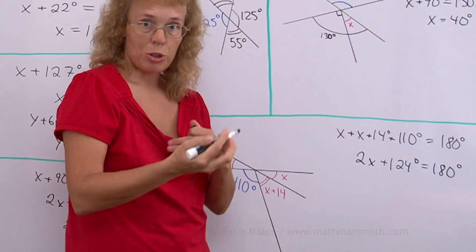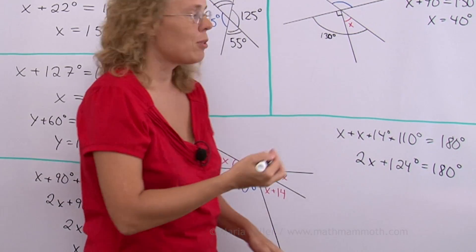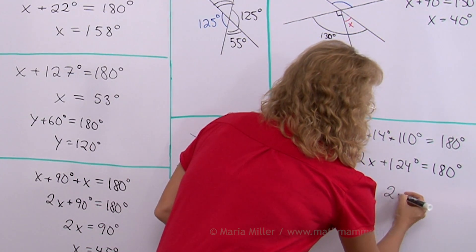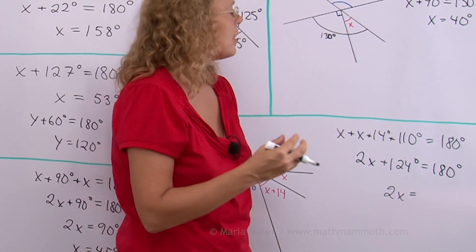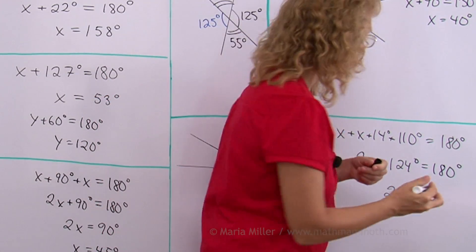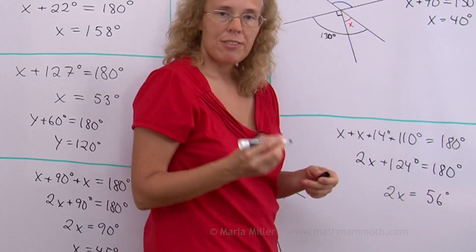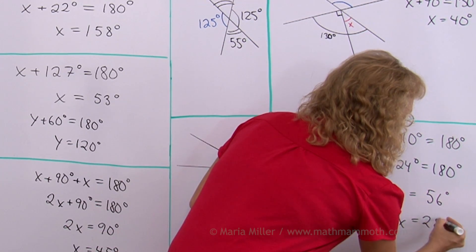And now we have two more steps. First we subtract 124 from both sides. So 2x is left alone here. On this side I subtract 180 minus 124. So that would be 56 degrees. And lastly divide both sides by 2. So we get x equals 28 degrees.